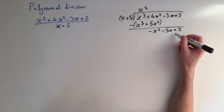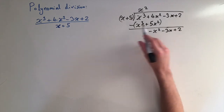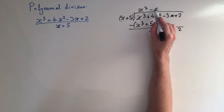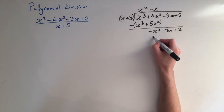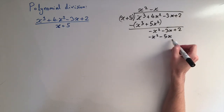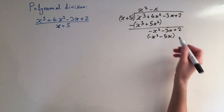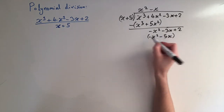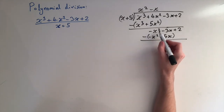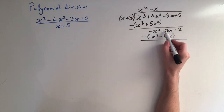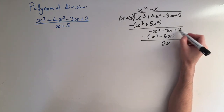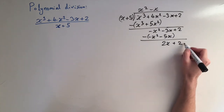Carrying on with the same process, we look at this term and divide minus x squared by x, giving us minus x. Then we multiply this by the bracket: minus x times x plus 5 gives minus x squared minus 5x. Now we need to be careful because we need to subtract this — I like to put brackets here to make sure we keep track of the minus signs. These are double minuses so we add them on. The x squared terms cancel, and minus 3x plus 5x gives plus 2x, and the constant plus 2 falls down.